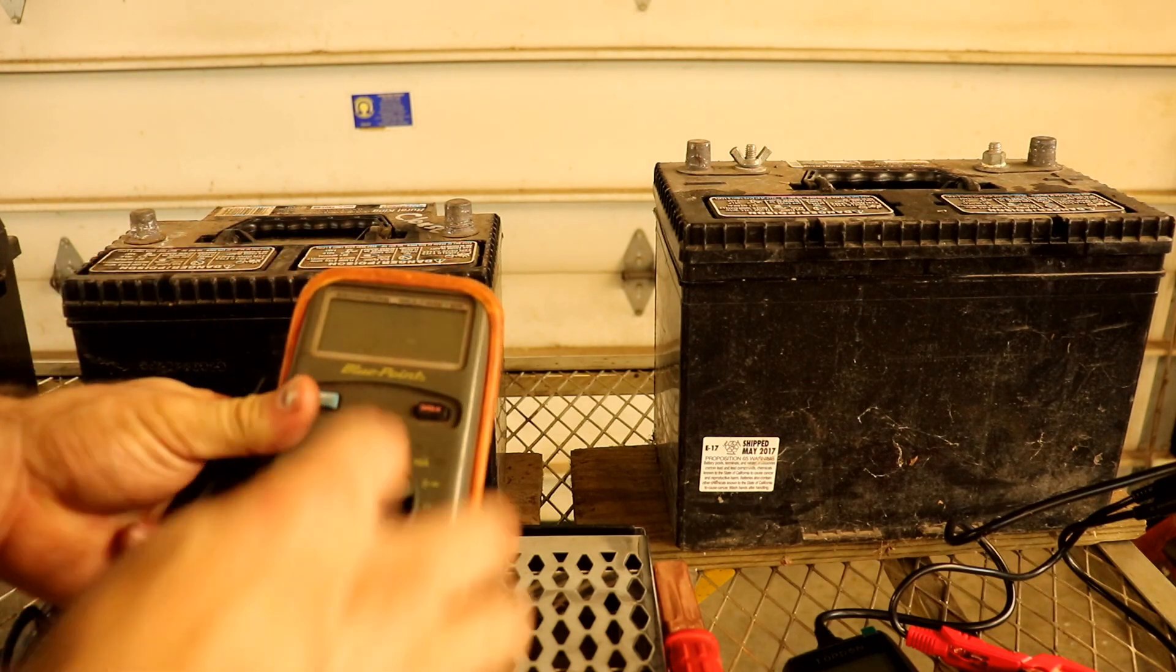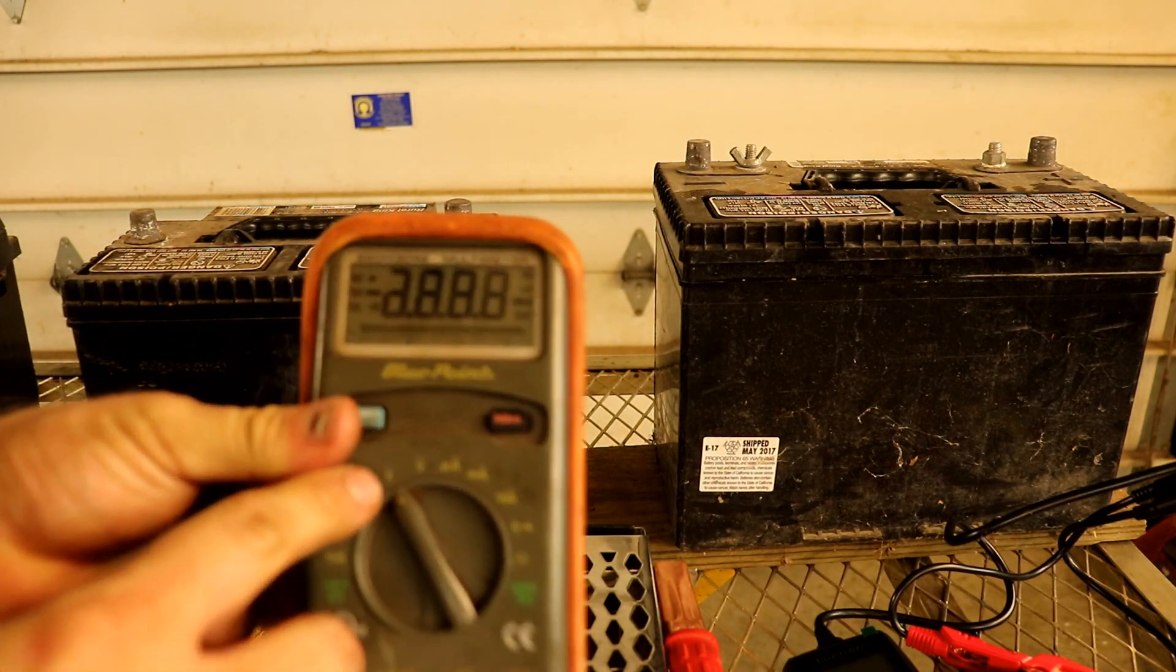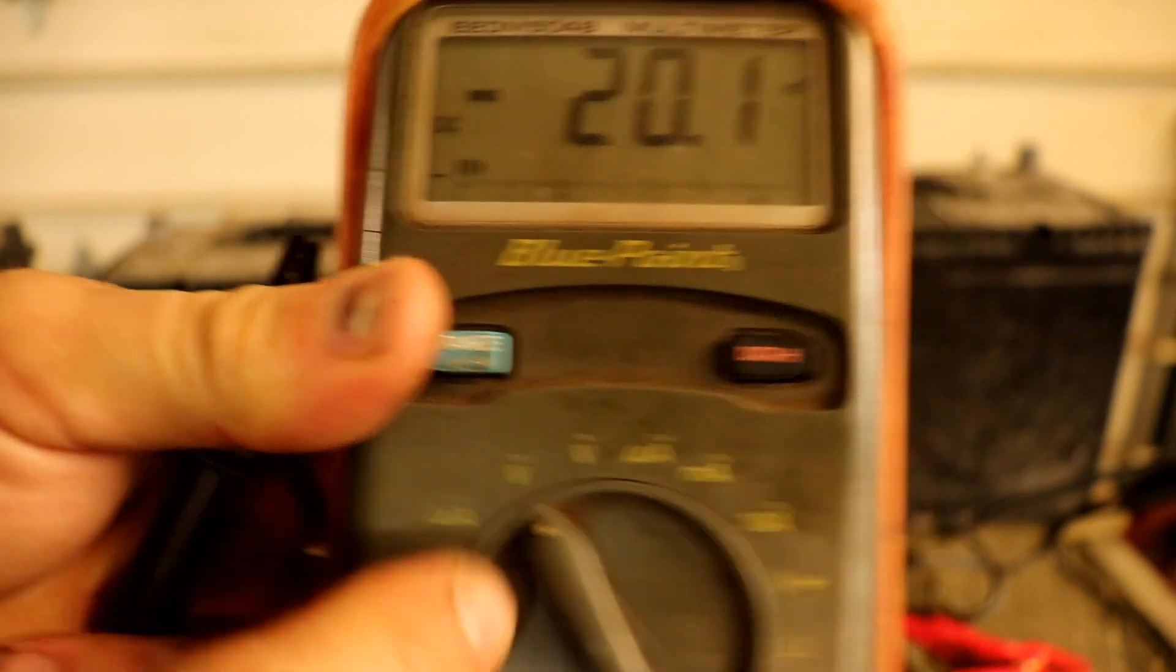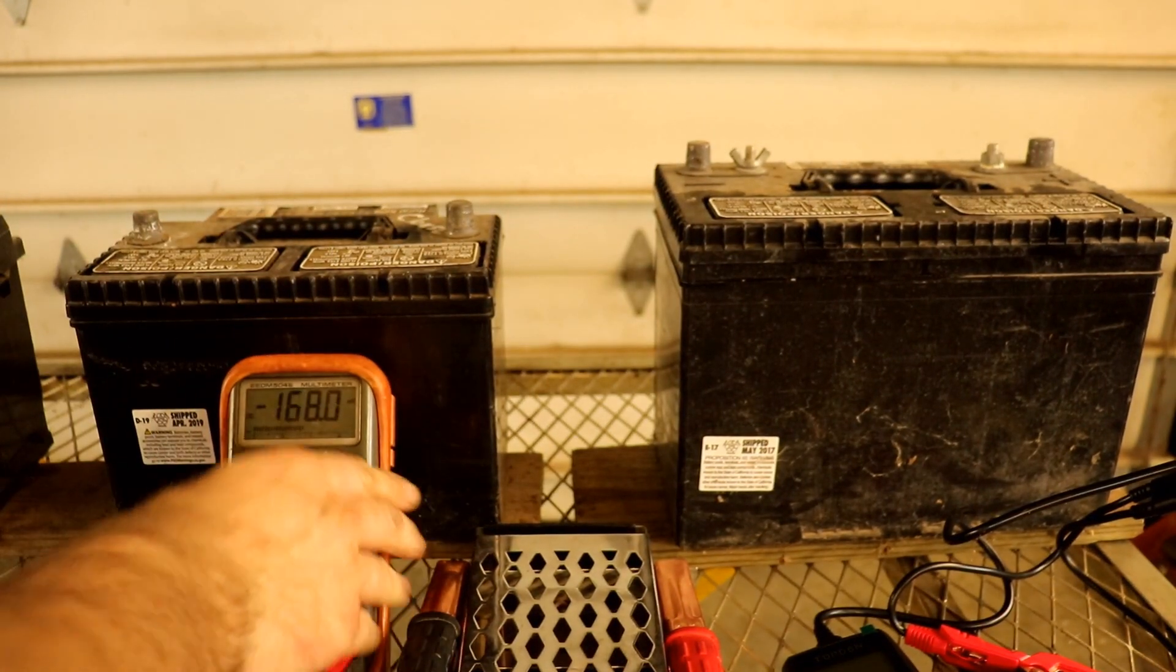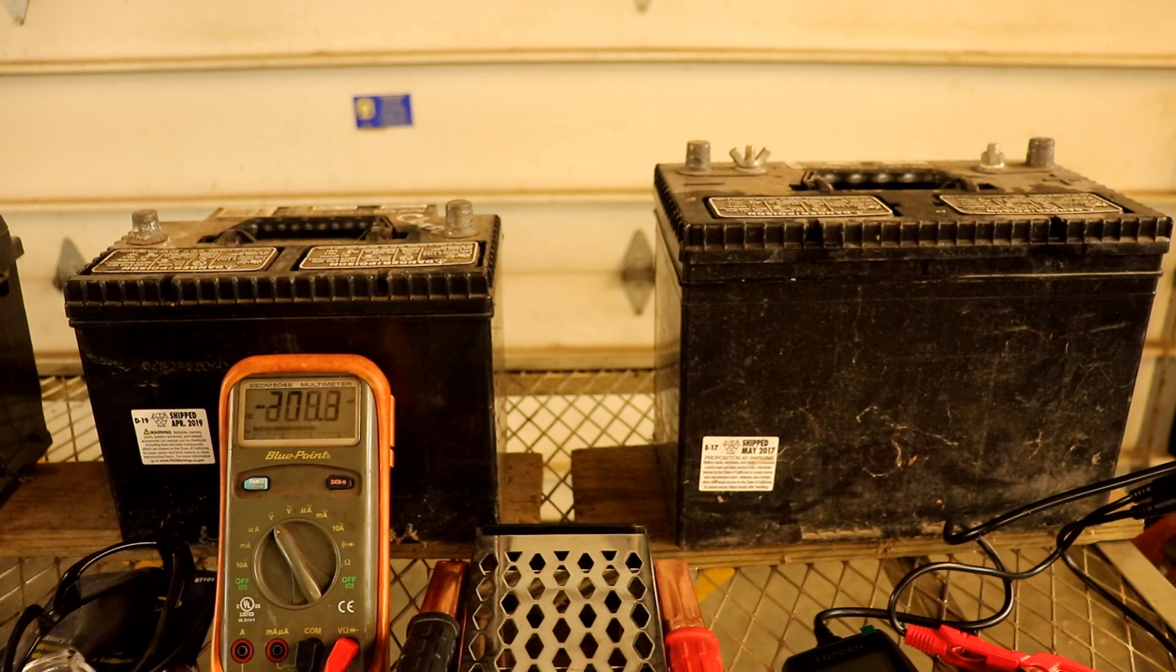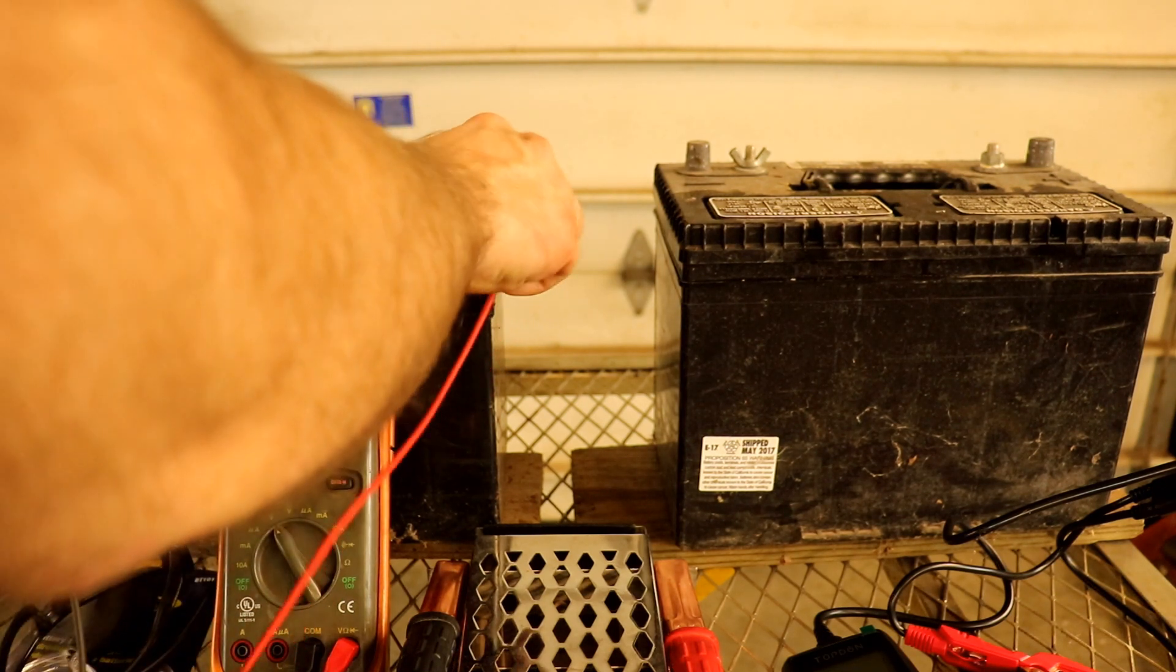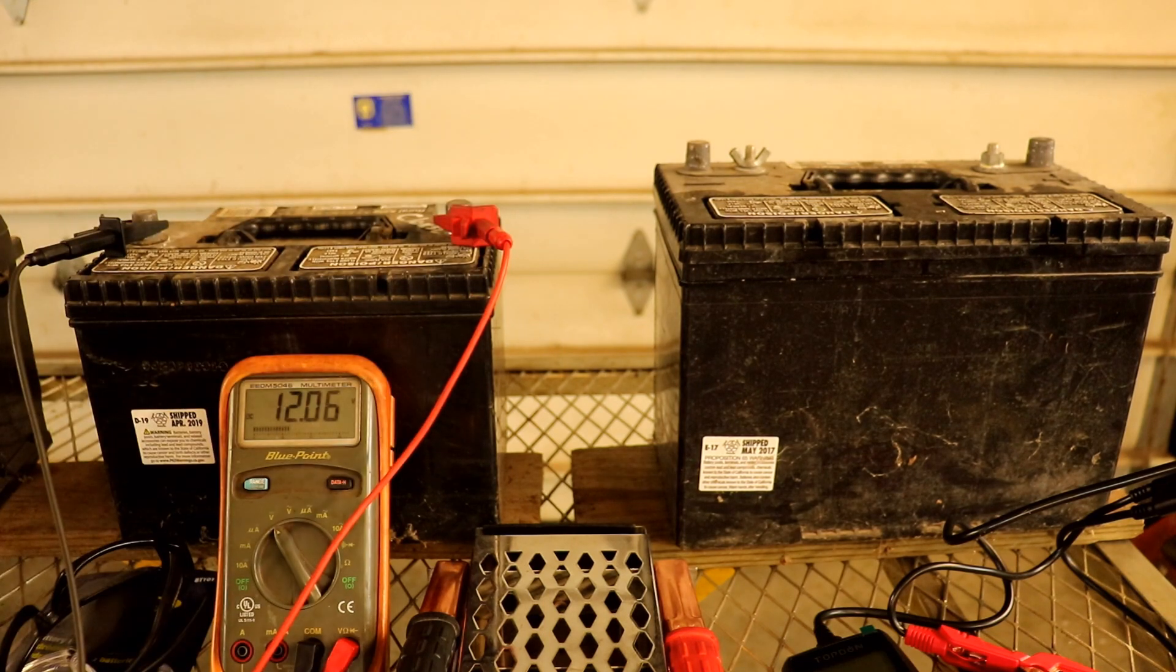The first tool we're going to look at is the multimeter. You need to put it on the DC volt setting. You can see this battery has 12.06 volts. A fully charged battery has 12.6 volts.